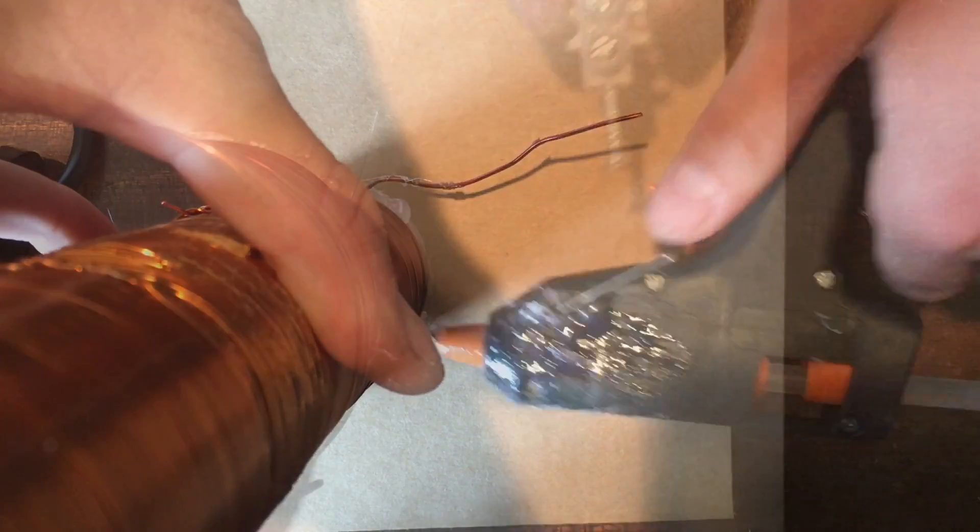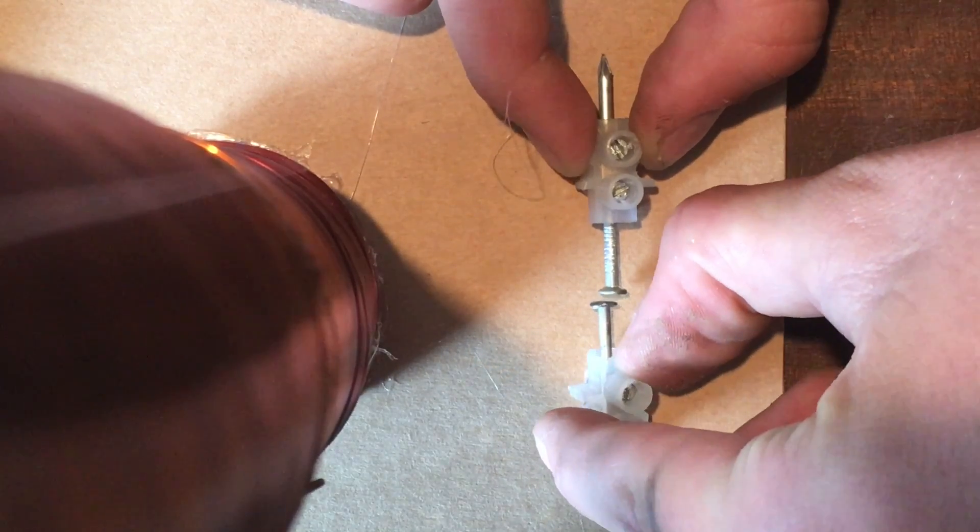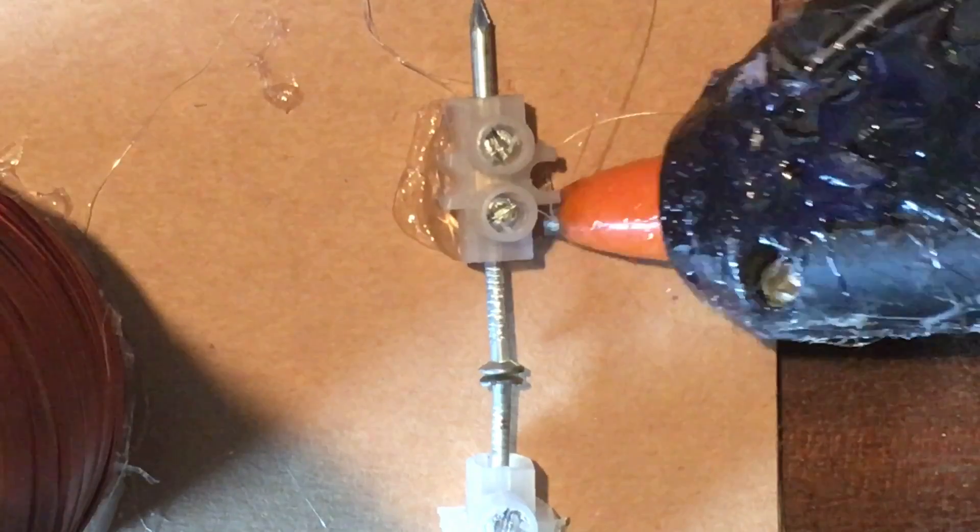Then take two circuit blocks with nails loosely held in them and glue them down so that the nails are less than a quarter of a millimeter away. This will be the spark gap.